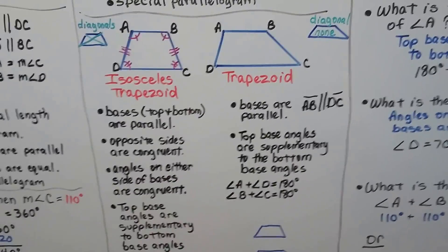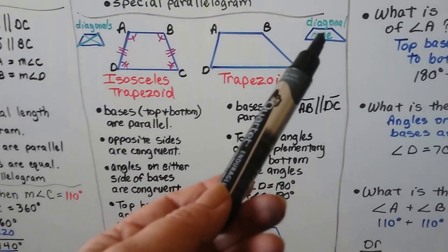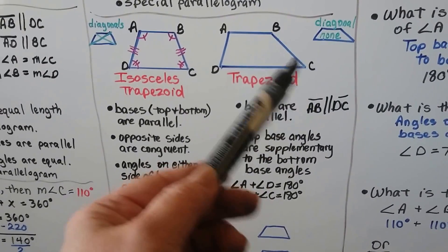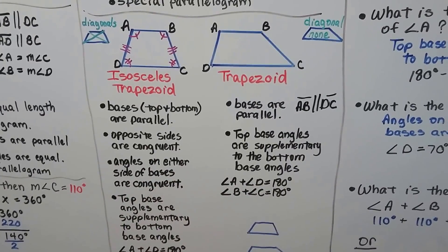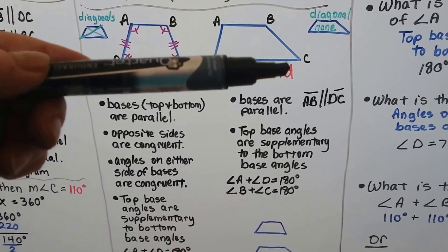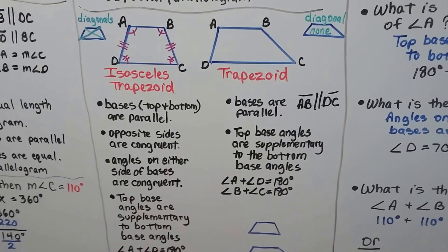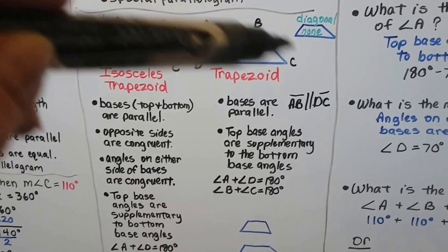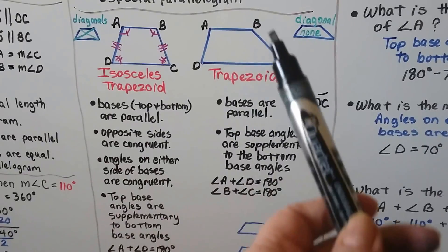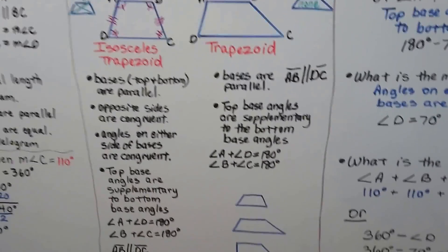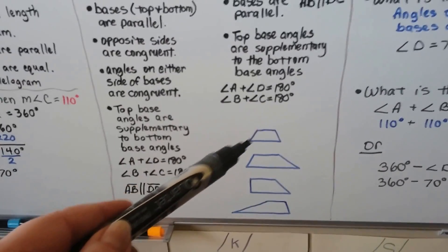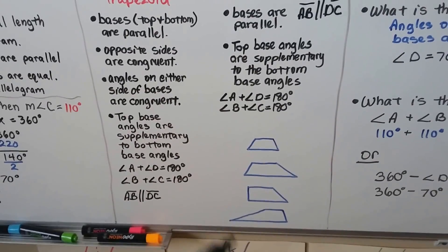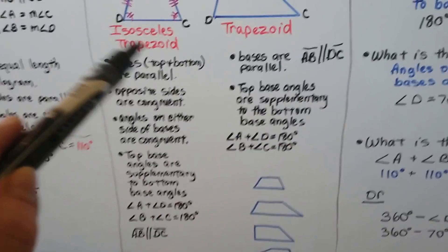Now this is just a trapezoid — it's not an isosceles trapezoid. Notice it's got no diagonals, whereas the isosceles trapezoid has diagonals. This one is sticking out a little bit farther on angle C. The bases are parallel: AB is parallel to DC. The top base angles are supplementary to the bottom base angles — A and D total 180, and B and C total 180. But the legs are not the same length. A trapezoid can be shaped like an isosceles, have one leg sticking way out, or even have a right angle.